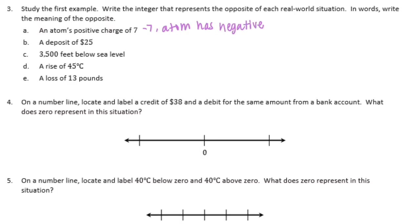A deposit of 25 dollars: if you are depositing money you are putting money in and your bank account is growing, so the opposite of that would be negative 25, meaning a withdrawal of 25 dollars.